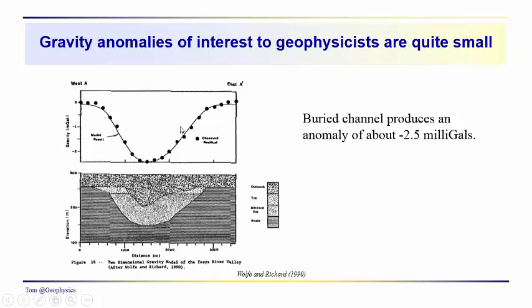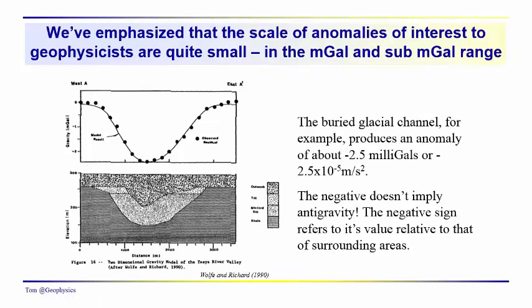One of the points that we've been making is that the gravity anomalies that we're interested in in geophysics are often quite small. Here we have, we mentioned this last time, the gravitational field variations over the Teyze River Valley, producing anomalies of about minus 2.5 milligals. The negative sign refers to the value of the anomaly relative to the background, relative to the surrounding area.